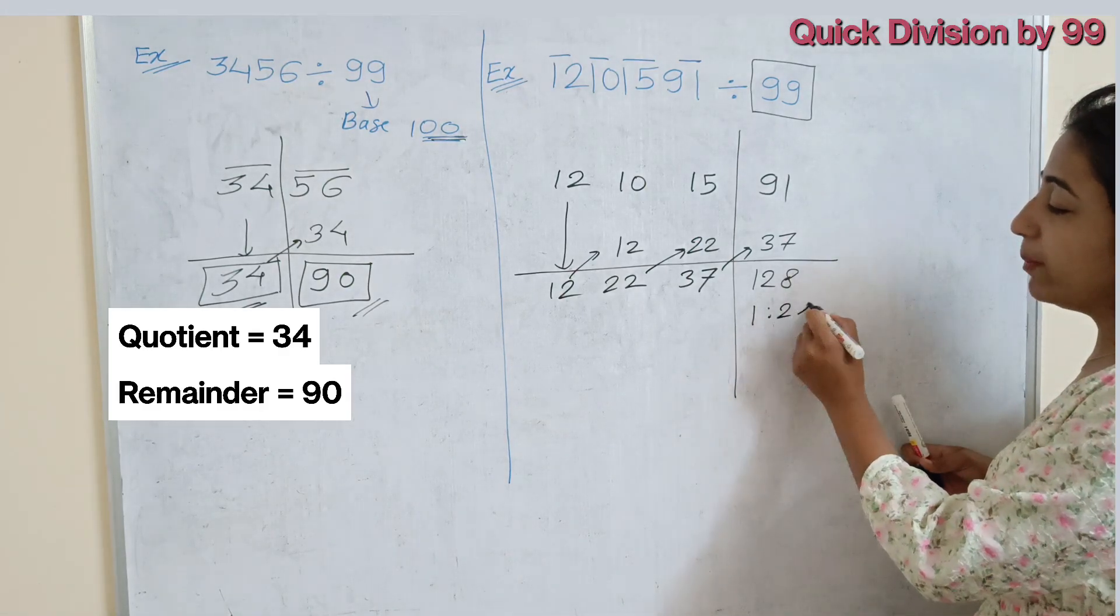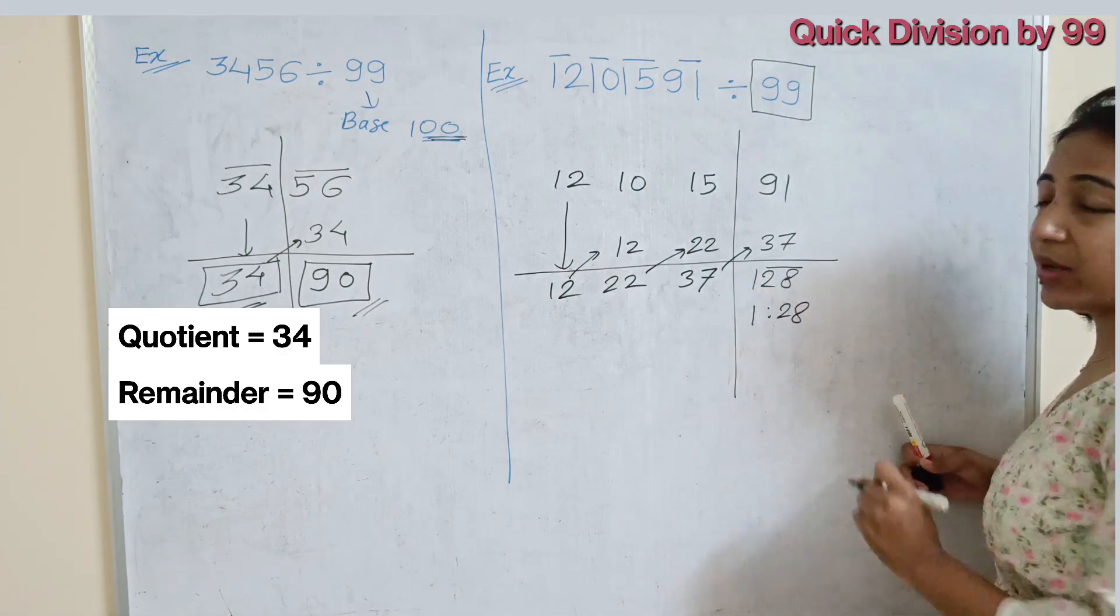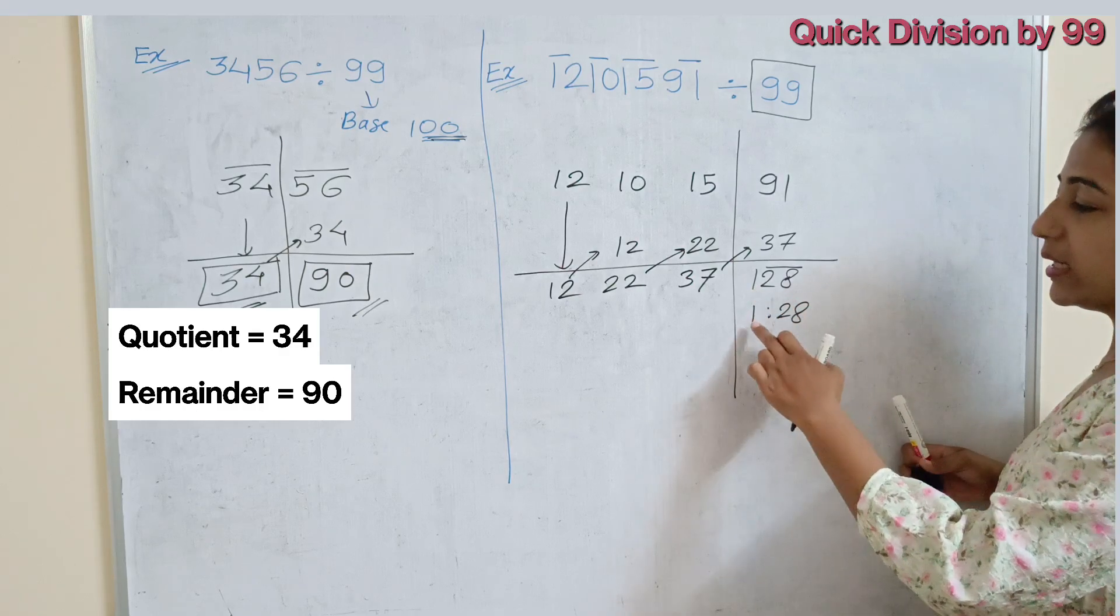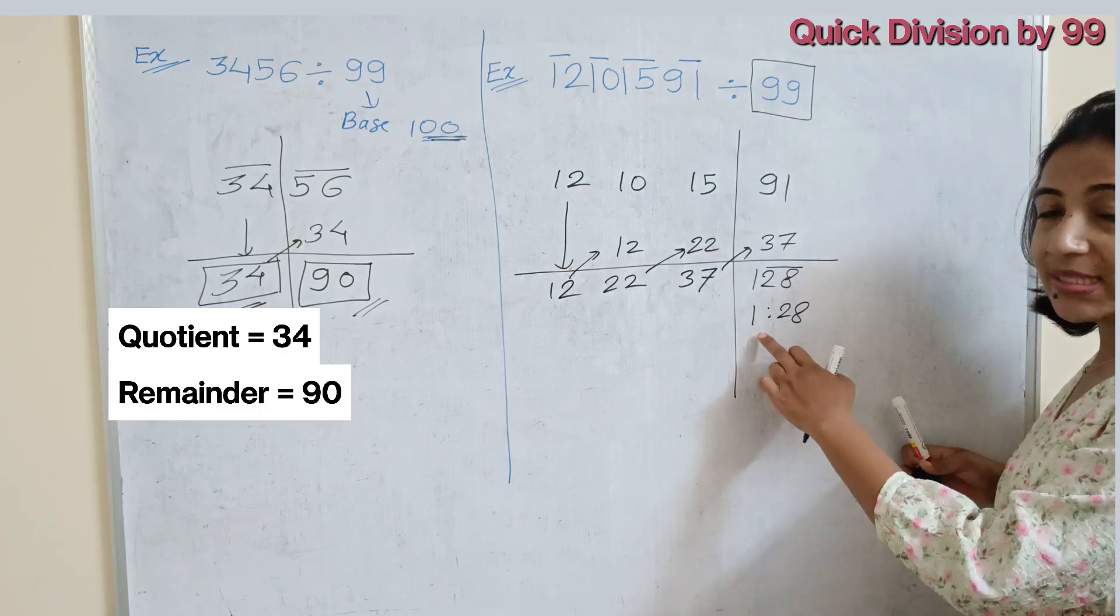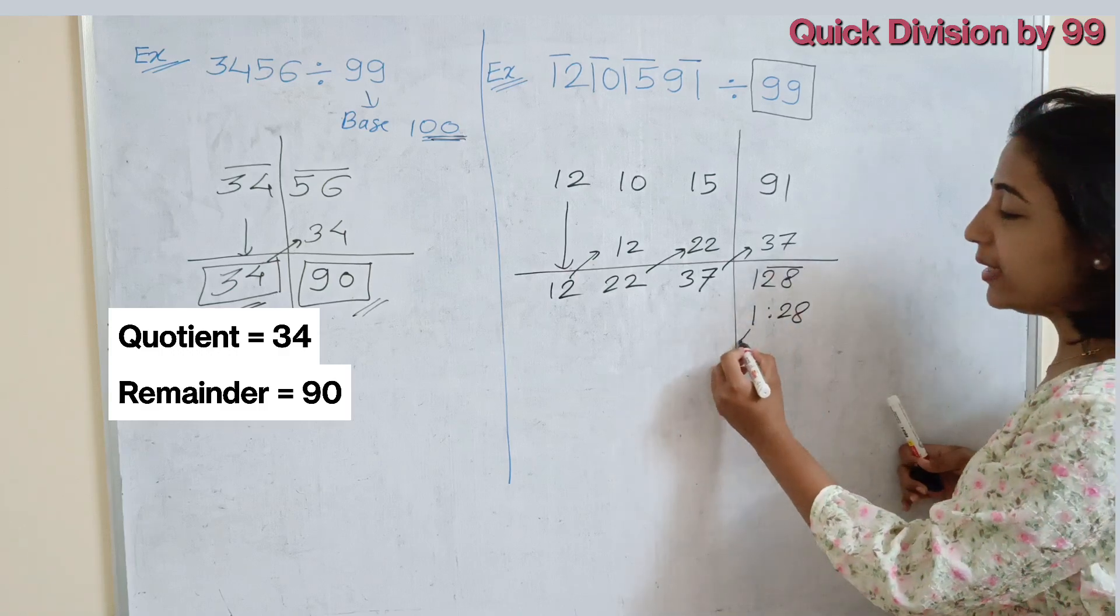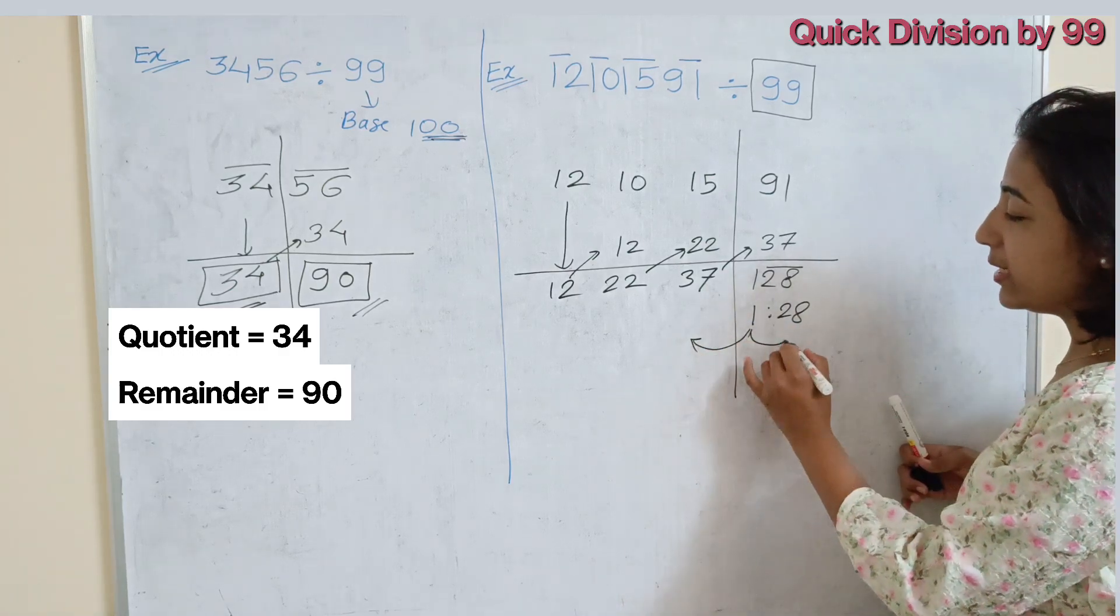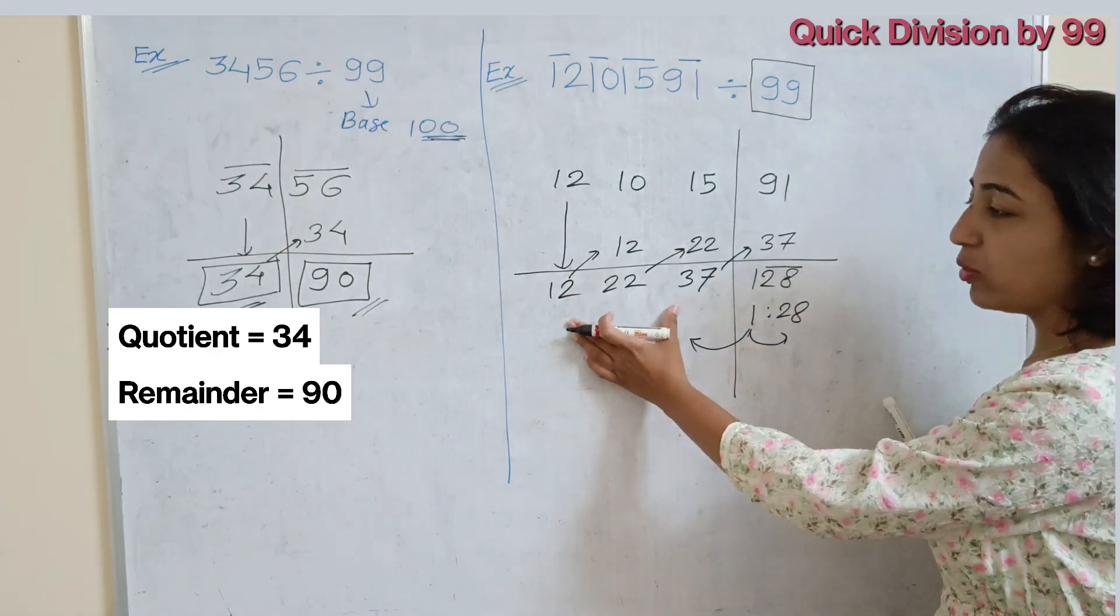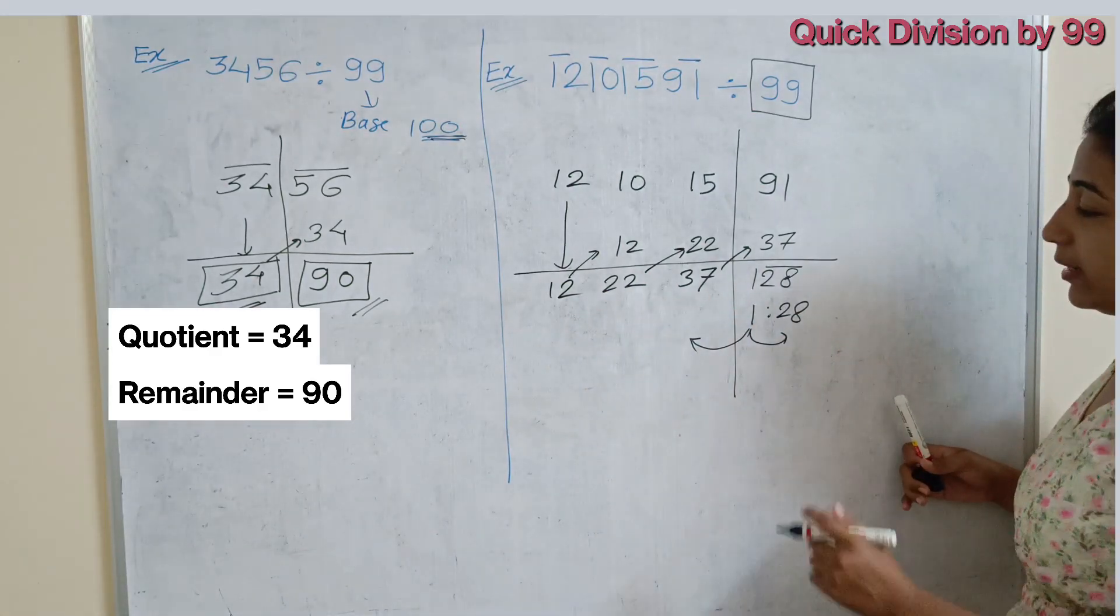So make the pair of 2, 2. So obviously, if we are making the pair of 2, 2 from right side, one pair is 28. Remaining is 1. And this 1 is the extra number which you have to add in the left as well as right part. Left part is representing the quotient and right part is representing the remainder.